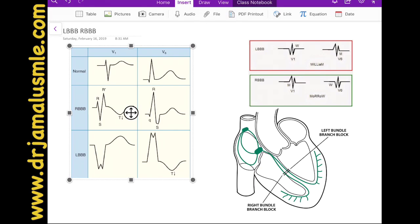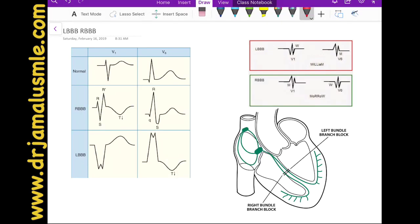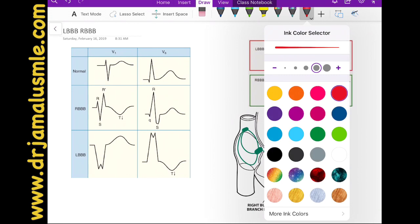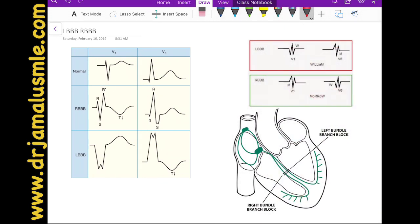I would like to talk about the normal conduction before we start with the right bundle branch block or the left bundle branch block. Remember that the left bundle in normal patients is usually faster than the right bundle. So the initial electrical activity starts in the left bundle instead of the right bundle.